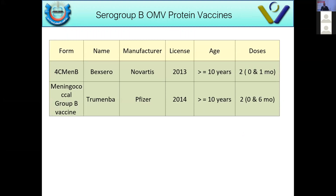Serogroup B is another story. There are no successful trials producing conjugate vaccines for serogroup B. However, outer membrane vesicle vaccines exist, using technology similar to the human papillomavirus vaccine. We don't have these in Jordan. Different vaccines such as Bexsero and Trumenba are available for serogroup B.